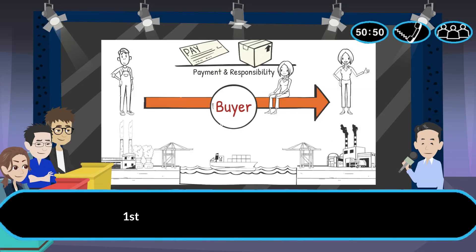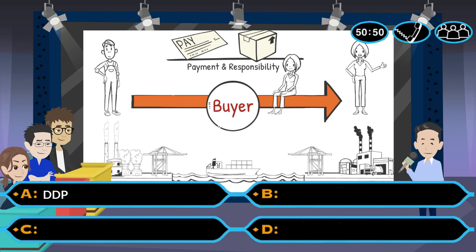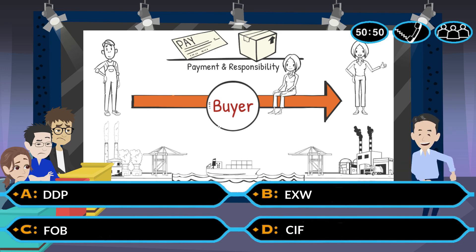First question. Which Incoterm is applicable? A. DDP, B. EXW, C. FOB, D. CIF.